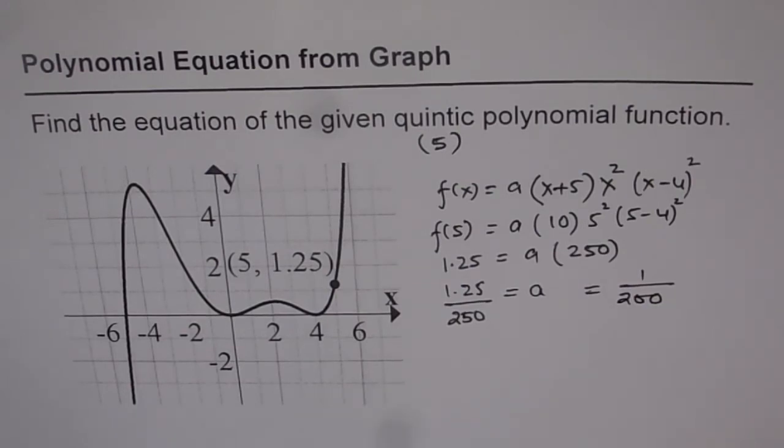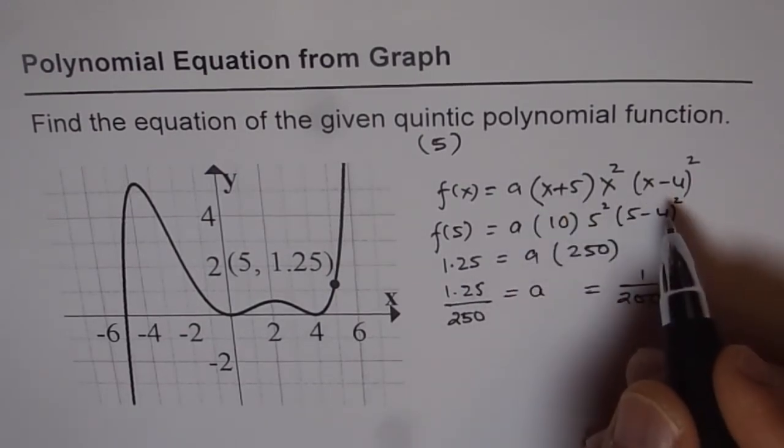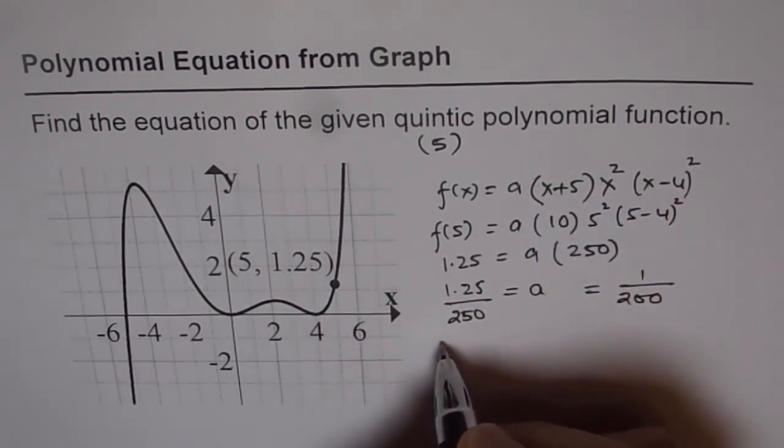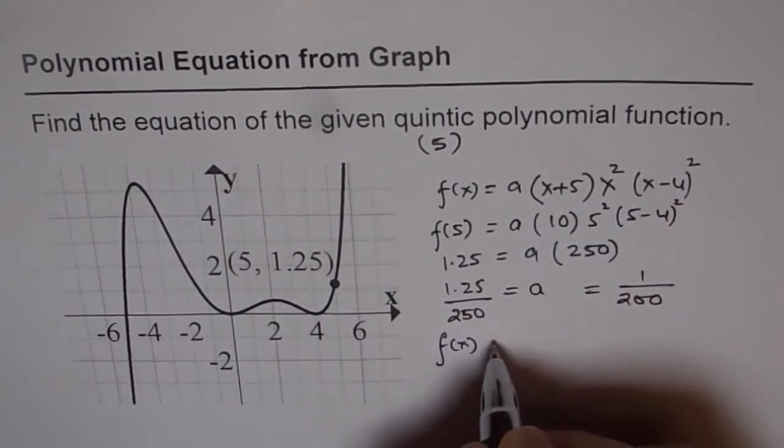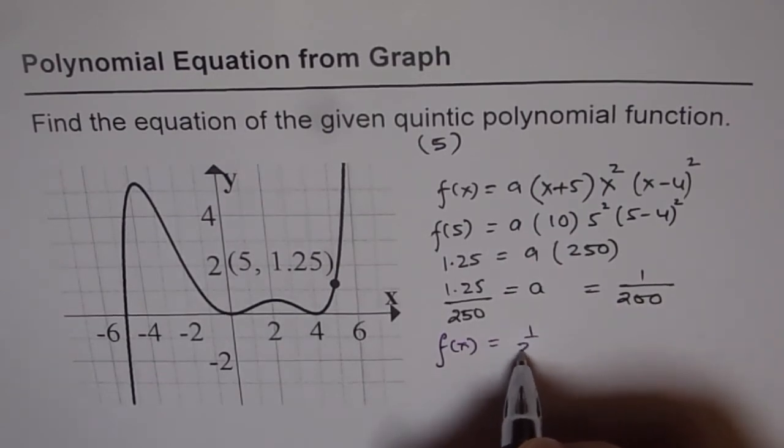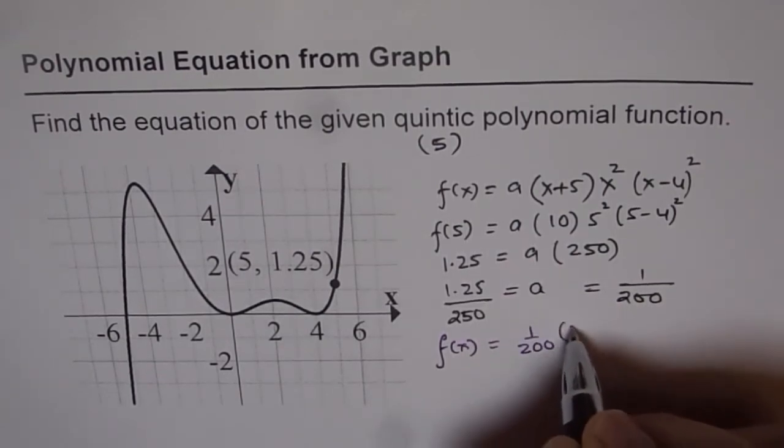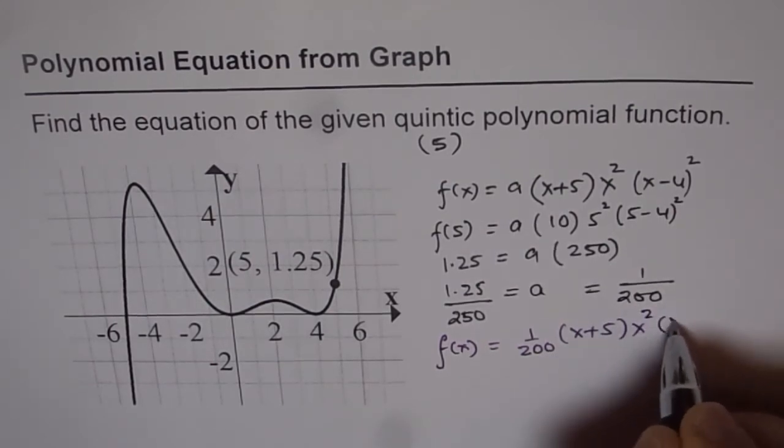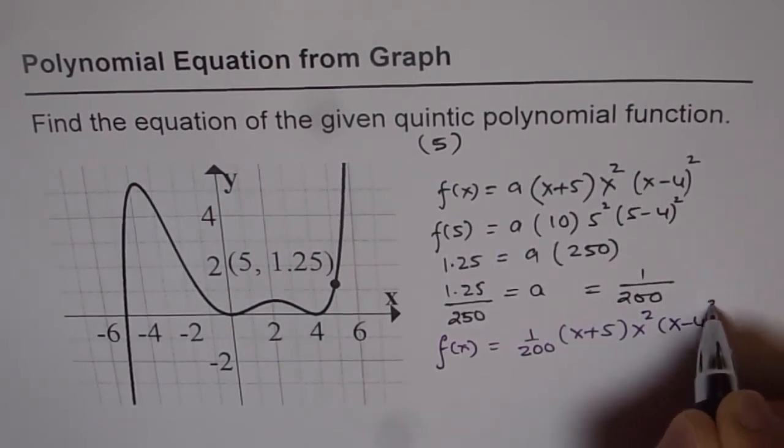Now once you get the value of a you can finally write down your specific function out of the family of curves which you started with. So now we can say our function is 1 over 200 times (x + 5) times x squared times (x - 4) whole squared.